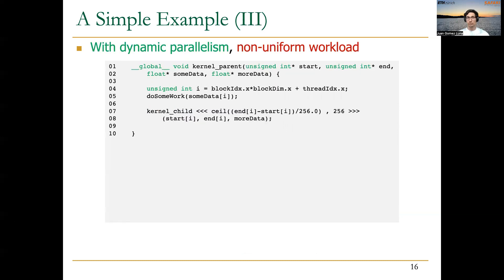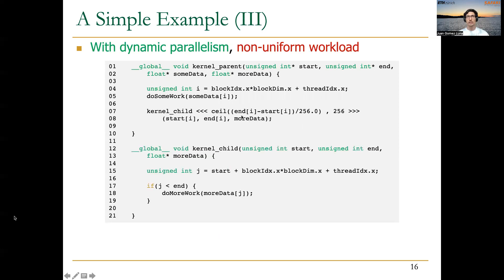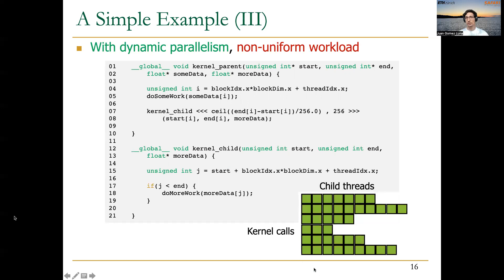With dynamic parallelism, we can launch a child kernel per parent thread, where the number of threads in the child kernel equals the number of iterations in the original for loop. The child kernel performs the same computation that was previously done in the loop. In this case, the number of iterations per parent GPU thread is the same, but those iterations are now assigned to child threads. Even though different parent threads may have different amounts of work, the amount of work per child thread remains the same, yielding better load balance across CUDA threads.